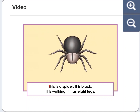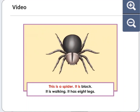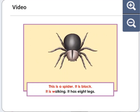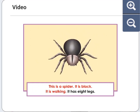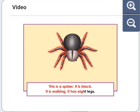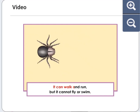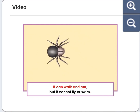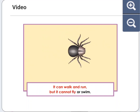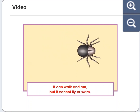This is a spider. It is black. It is walking. It has eight legs. It can walk and run, but it cannot fly or swim.